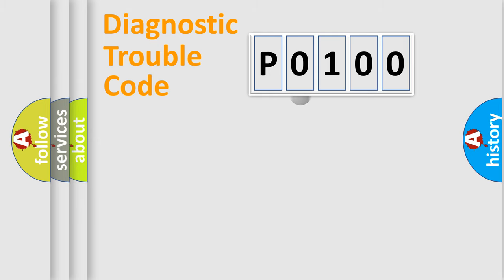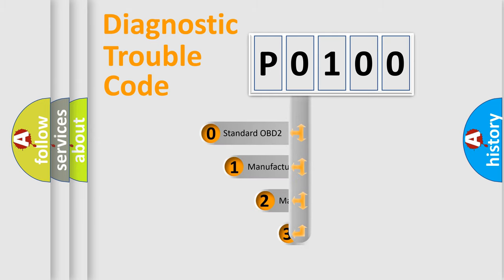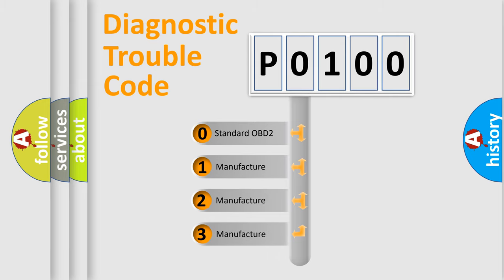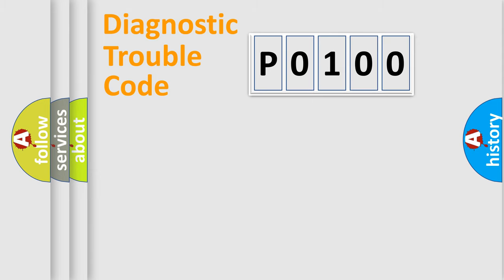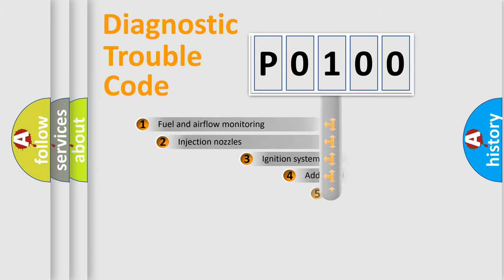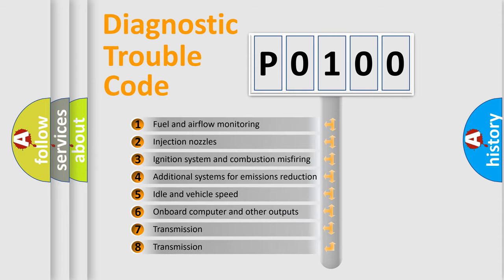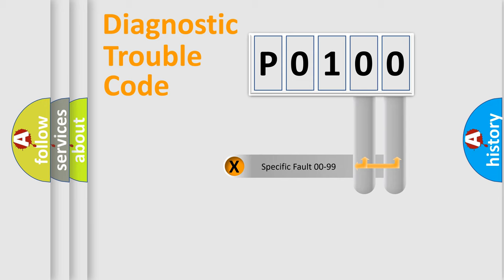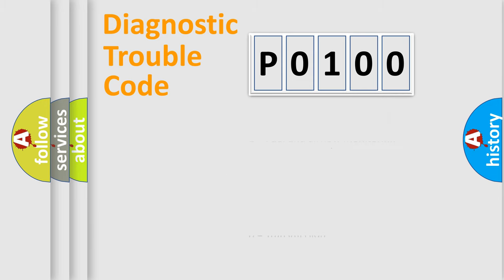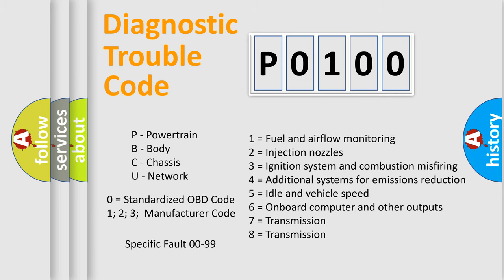This distribution is defined in the first character of the code. If the second character is expressed as zero, it is a standardized error. In the case of numbers 1, 2, or 3, it is a manufacturer-specific error. The third character specifies a subset of errors, and this distribution is valid only for the standardized DTC code. Only the last two characters define the specific fault of the group.